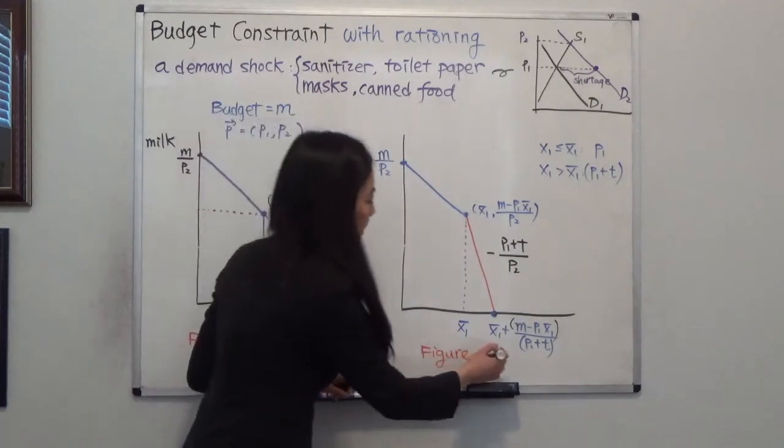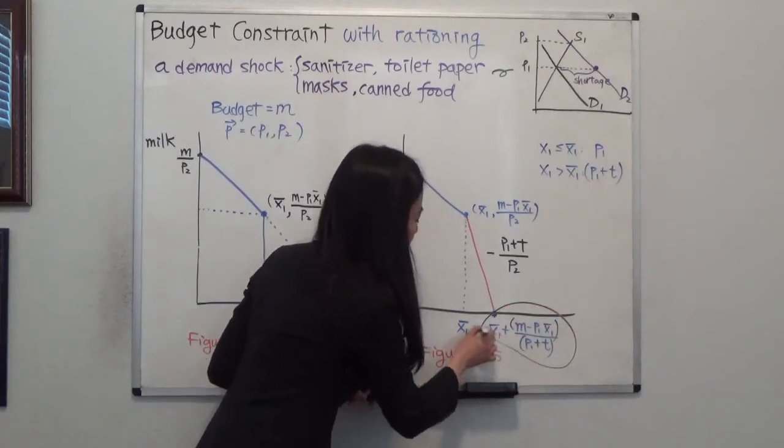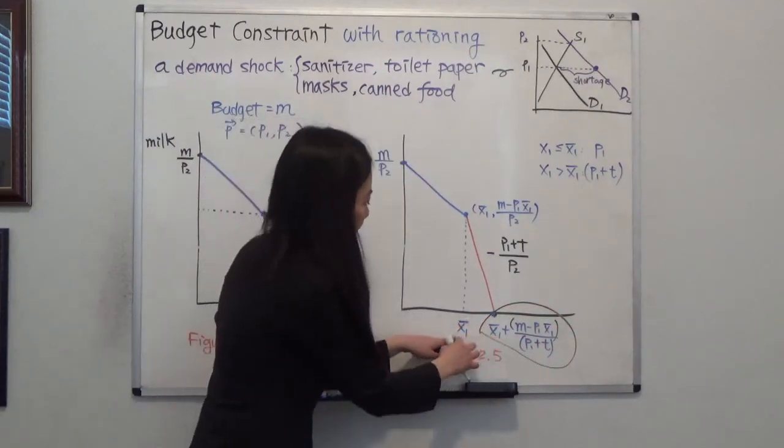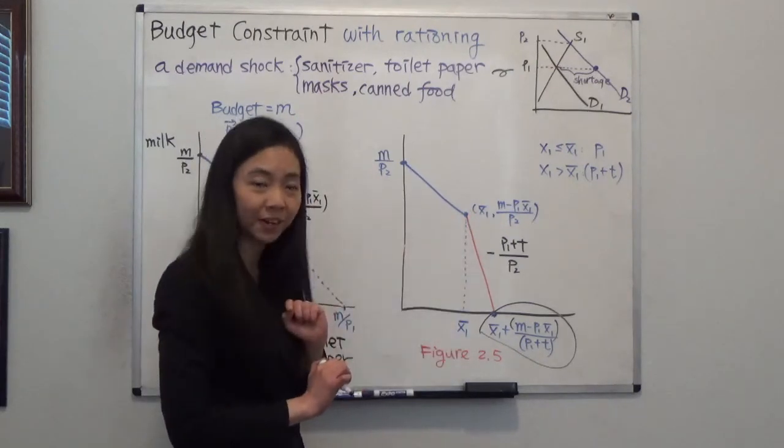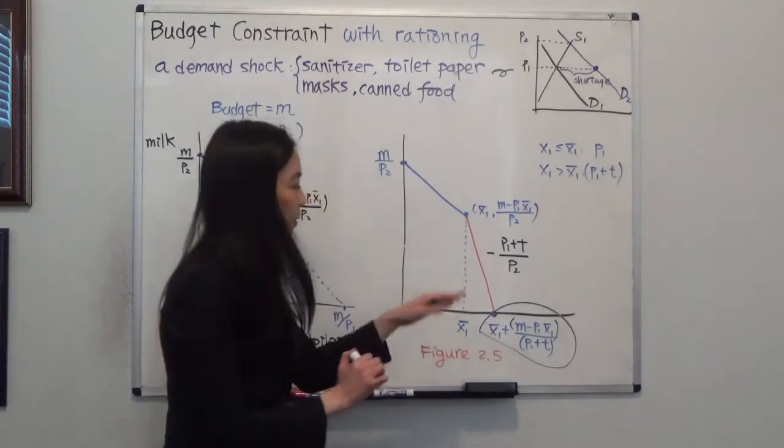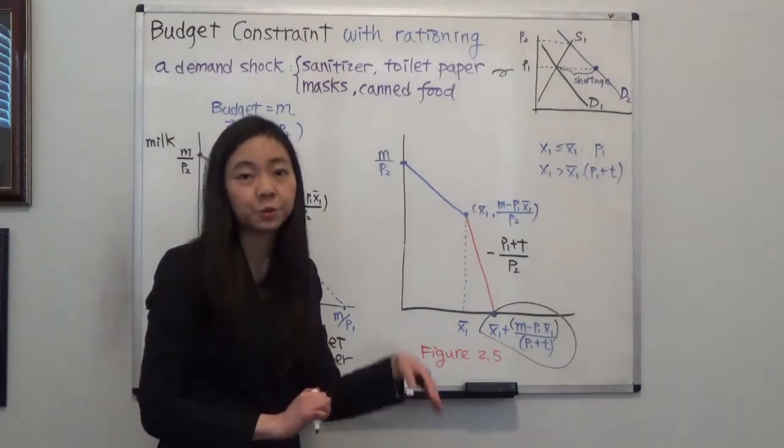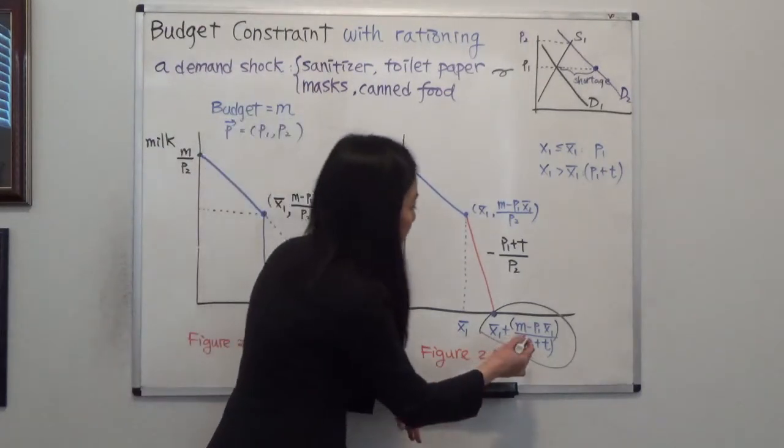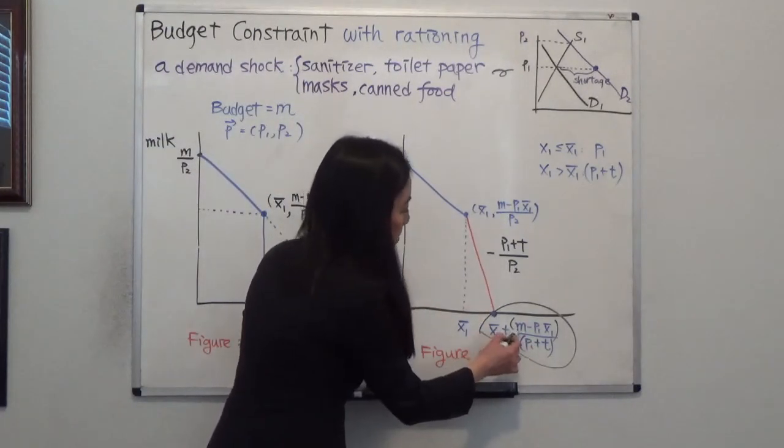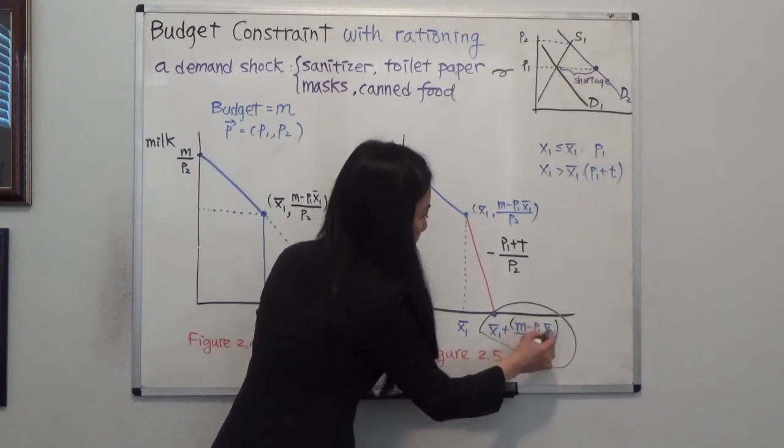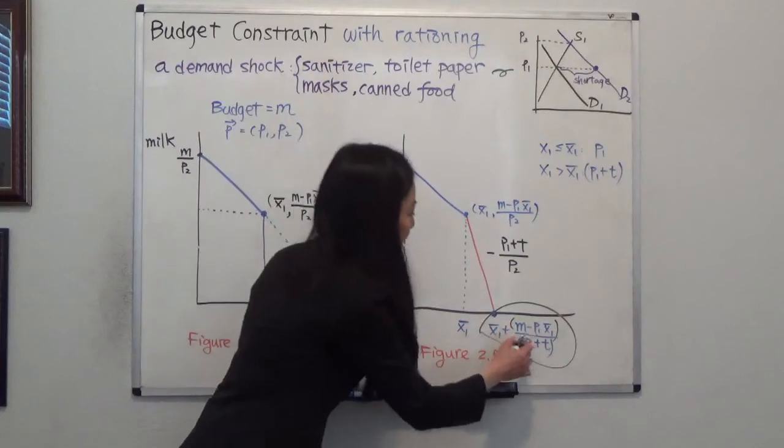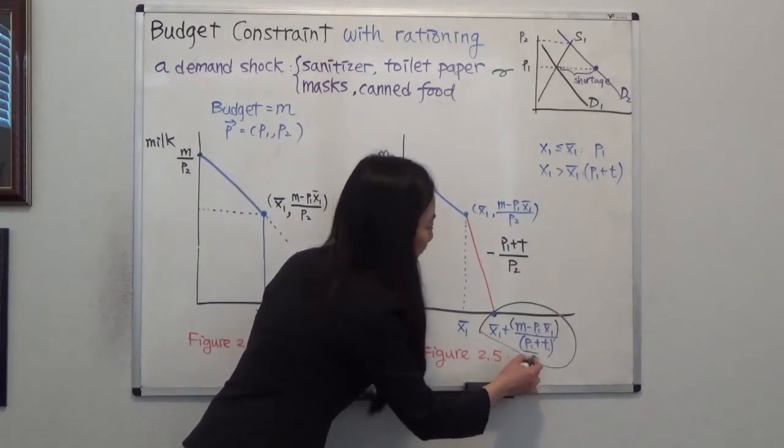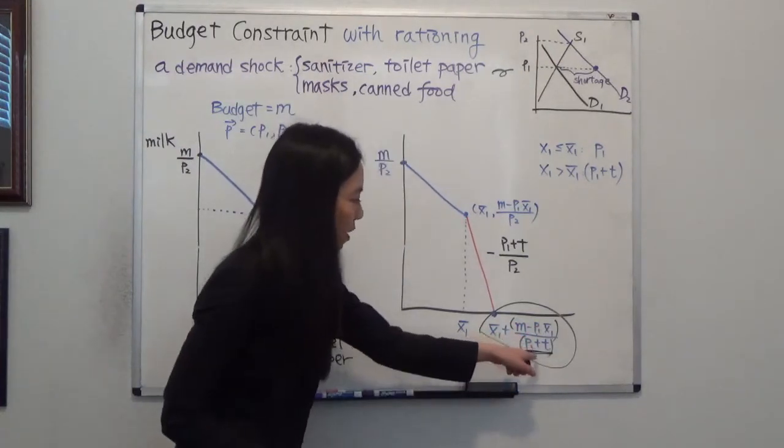And where is my intercept? So we know you bought x1 bar rows of toilet paper at the original price. And after that, suppose you use all the money to buy toilet paper. Then I know I have M minus P1 times x1 bar dollars left for the more expensive toilet paper. Now that amount of money divided by the higher price P1 plus T, so that will be the extra rows of toilet paper I purchased after x1 bar.